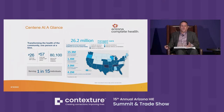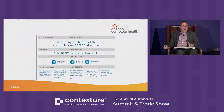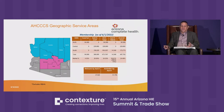A little bit about Centene: we're the largest Medicaid health plan in the United States, covering about 26.2 million individuals across the nation, including Medicare and marketplace, but the vast majority are on Medicaid. In Arizona, we're Arizona Complete Health Complete Care Plan. Combined with our sister agency Care First, we cover just under 500,000 Arizonans on Medicaid — the largest Medicaid plan in Arizona.